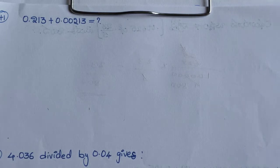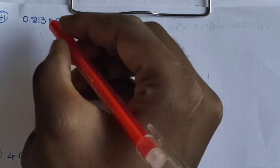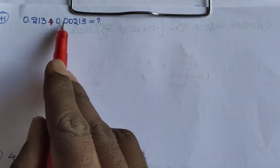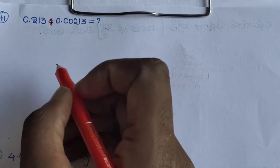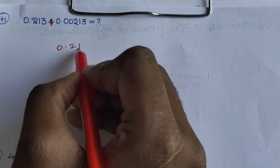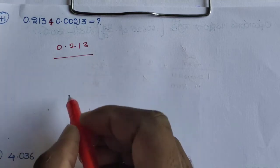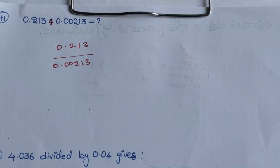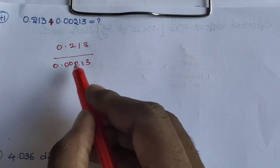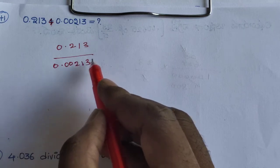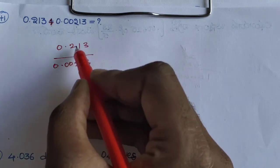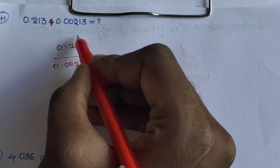For Group D and competitive exams, the answer options are: 1.213, divided 0.213, divided 0.00213. First of all, write 0.213. Next, 0.00213. The second decimal point placement: count 1, 2, 3, 4, 5 digits.